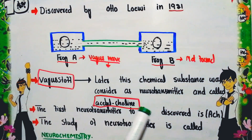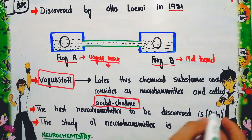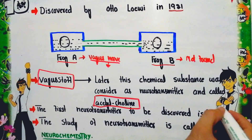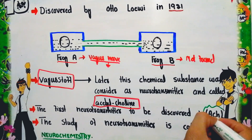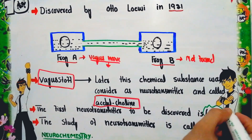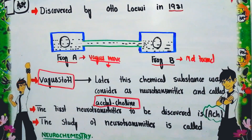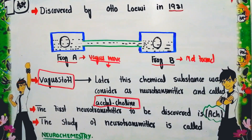The first neurotransmitter to be discovered was acetylcholine. The study of neurotransmitters is called neurochemistry.